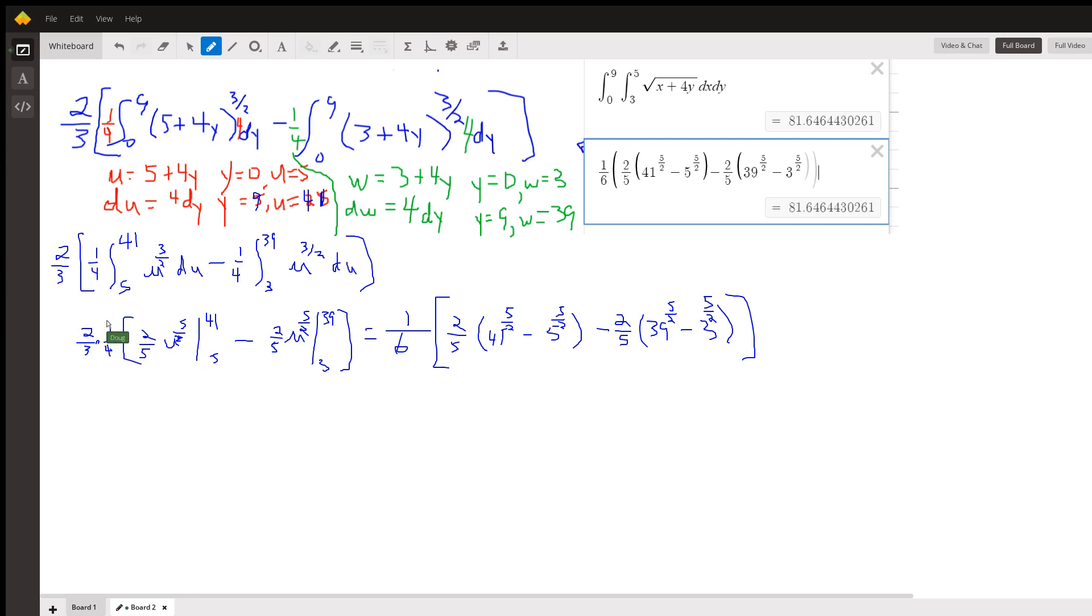And I brought the one-fourth out front there. There's a one-fourth in front of both of these integrals. So I can bring that one-fourth out front. And there's what you get if you evaluate each of these. Two-fifths of 41 to the five-halves minus 5 to the five-halves.